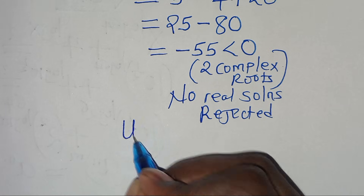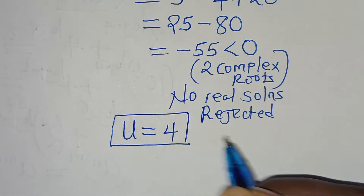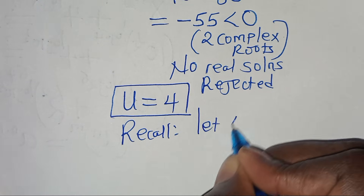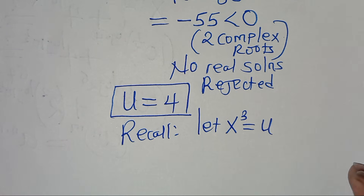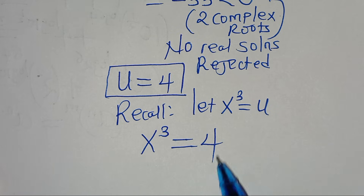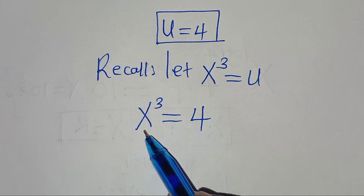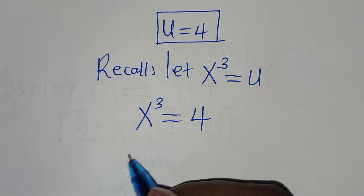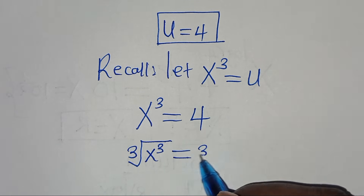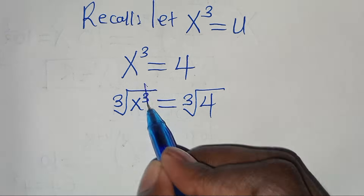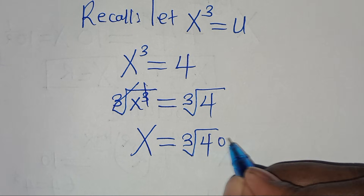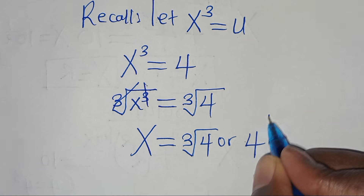Let's focus on u equals 4. Recalling that we let x to the power of 3 equal u, this means x to the power of 3 equals 4. To solve for x, we introduce a cube root on both sides: the cube root of x to the power of 3 equals the cube root of 4. So x equals the cube root of 4, or equivalently 4 to the power of 1 over 3.